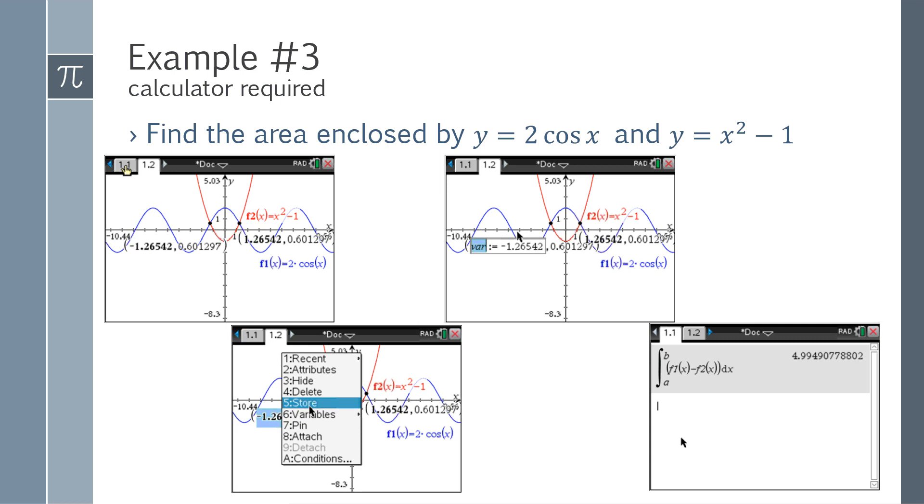I always name my lower bound A. And then if I do the same thing with the second intersection, click on the X, hit the dock button on the TI Inspire, choose store, and then call it B. If I then go to the affiliated calculator page, I can just say the bound from A to B.